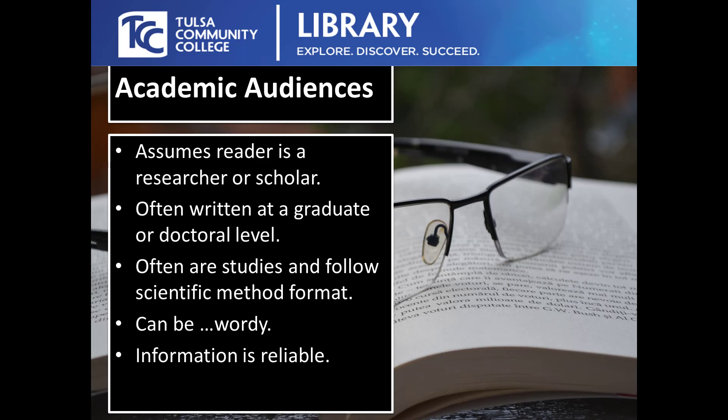Next is academic audiences. These are articles where the author assumes the reader is a scholar or researcher, often in the same field as the author. These articles are typically written at the graduate or doctorate level and use language that reflects that educational background. Often these articles cover a study of some sort and follow a structure similar to the scientific method, with an intro, a literature review covering prior research, a methodology, and a conclusion. Academic articles tend to be wordy and make use of an extensive vocabulary. An academic author wants to be thorough and specific, so they will often take 20 words to say something that might have been said in 10 words in a general-audience article.